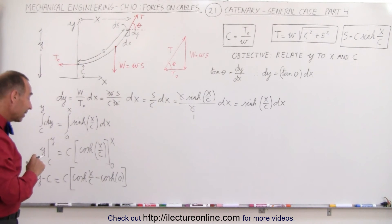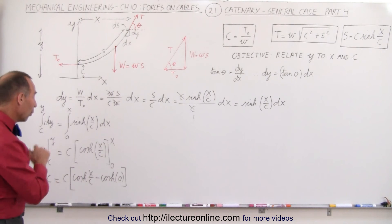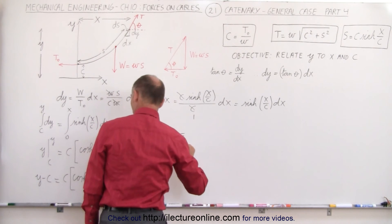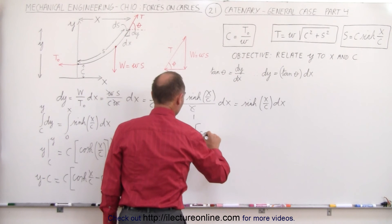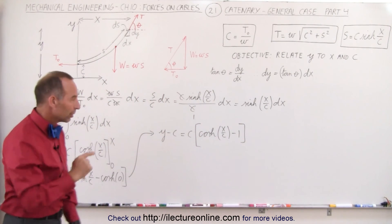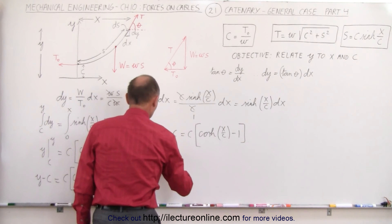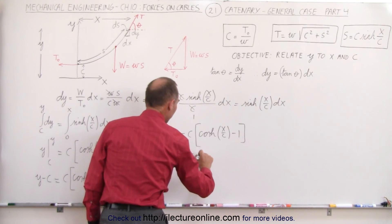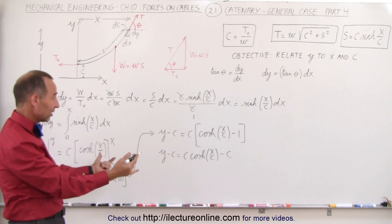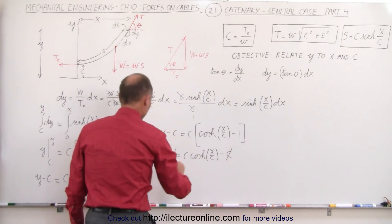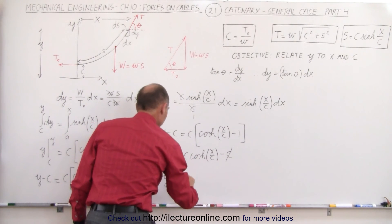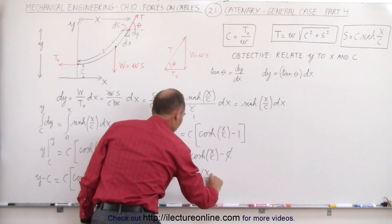The hyperbolic cosine of 0 is actually 1. So this equation becomes: Y minus C equals C times the hyperbolic cosine of X over C minus 1. Multiplying through, we get Y minus C equals C times the hyperbolic cosine of X over C minus C. The minus C on both sides cancels out, and finally we can say that Y — which was the objective of the video — is equal to C times the hyperbolic cosine of X over C.